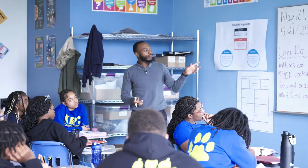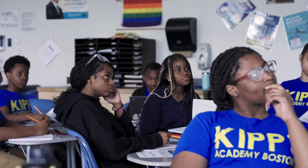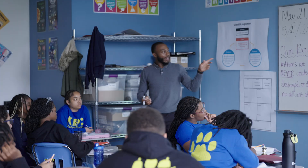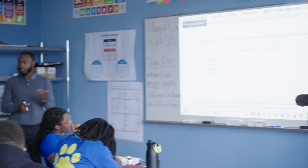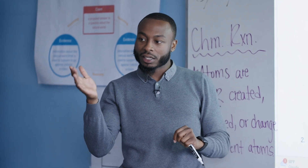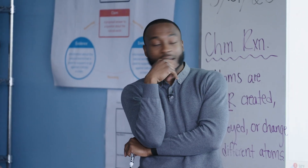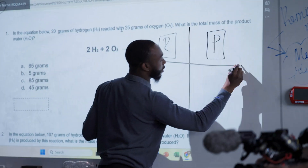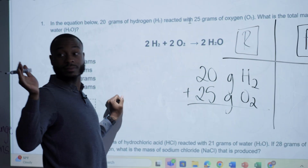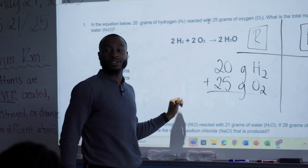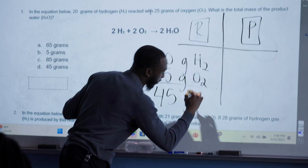That's what we're going to investigate in this next activity. In the equation below, 20 grams of hydrogen (H2) reacted with 25 grams of oxygen (O2) — what is the total mass of the product, water? We could add the mass — we could add the grams. The grams of what, Yadier? The atoms. So we're going to use Yadier's advice. Layla, what is the total mass of the reactants we started with? 45 grams. Excellent. Layla made sure to add that unit right to her response.